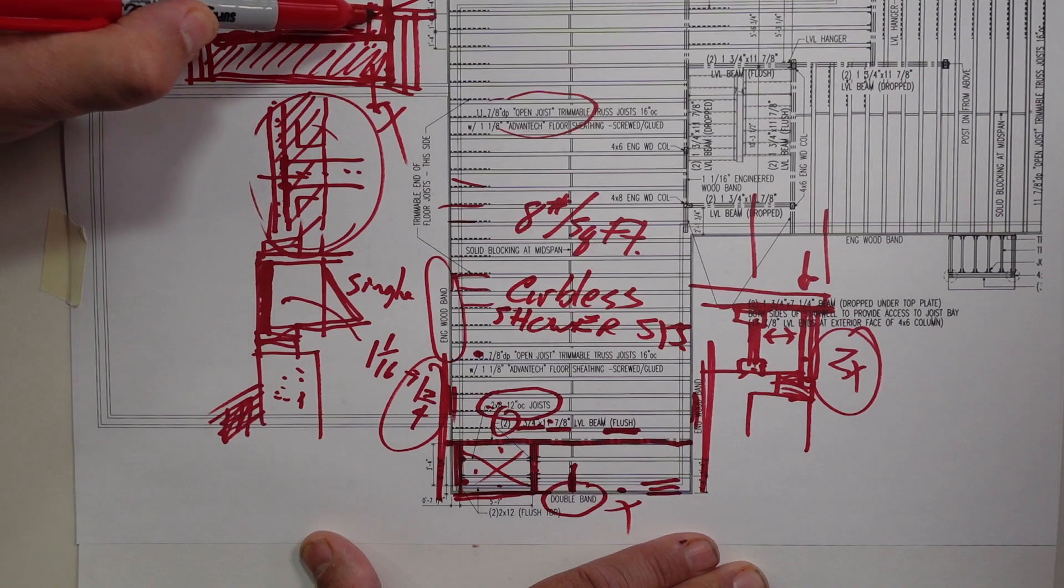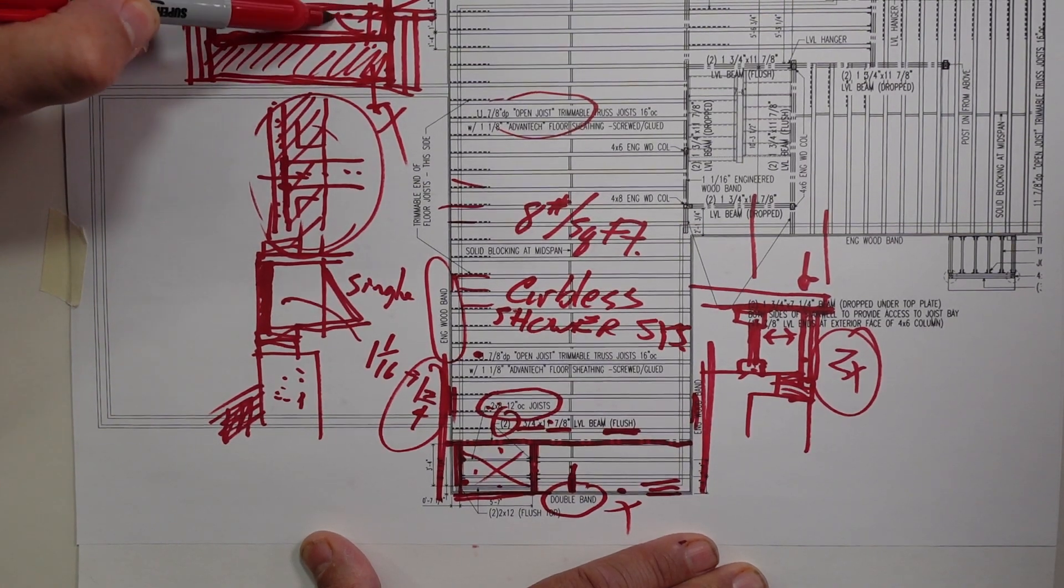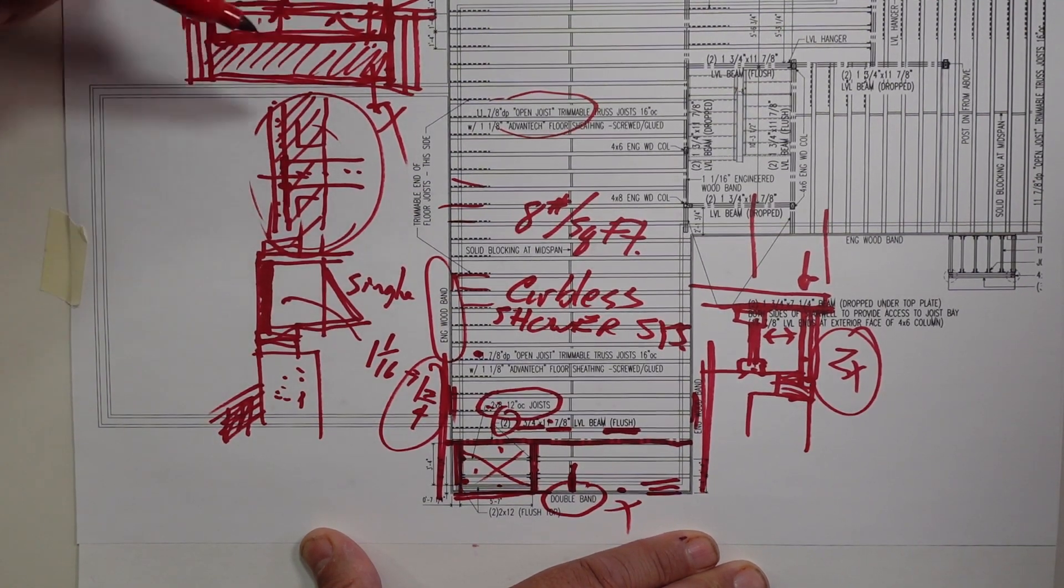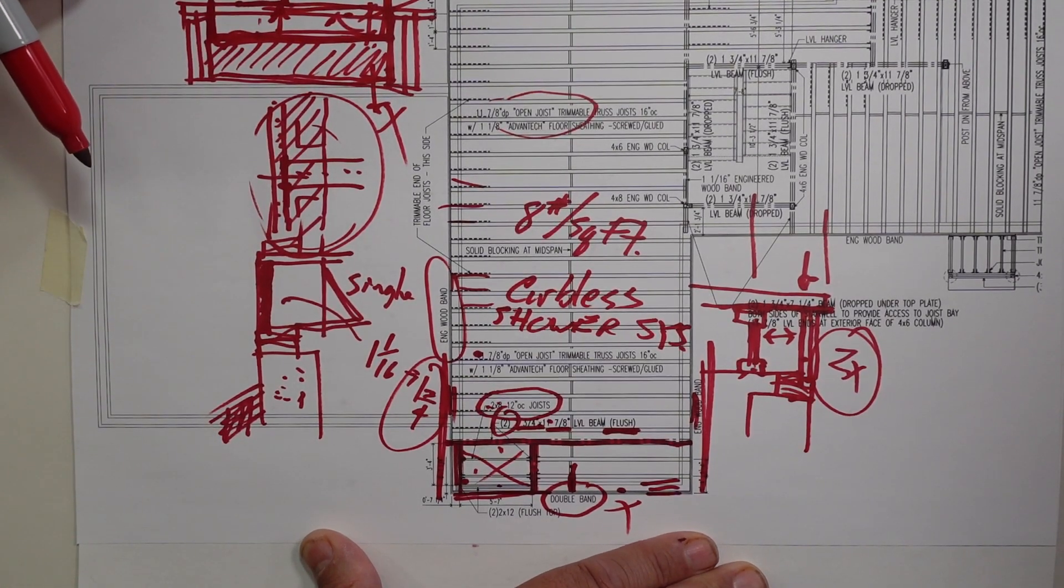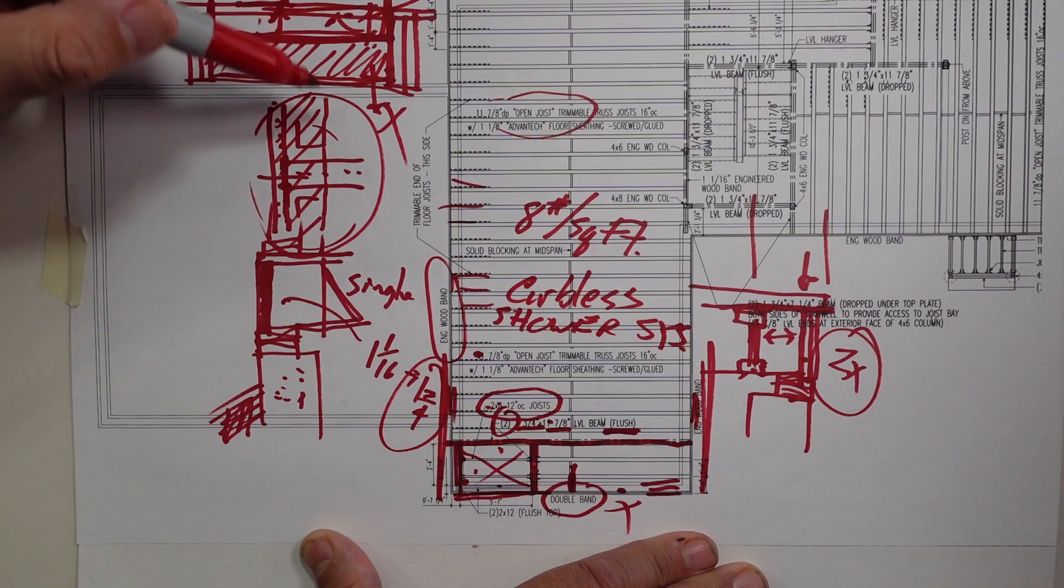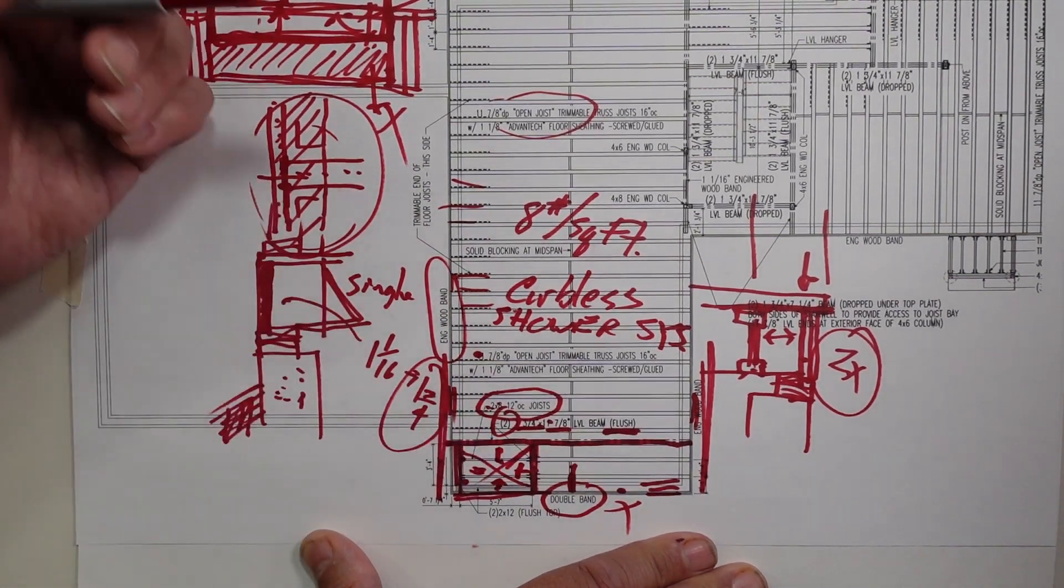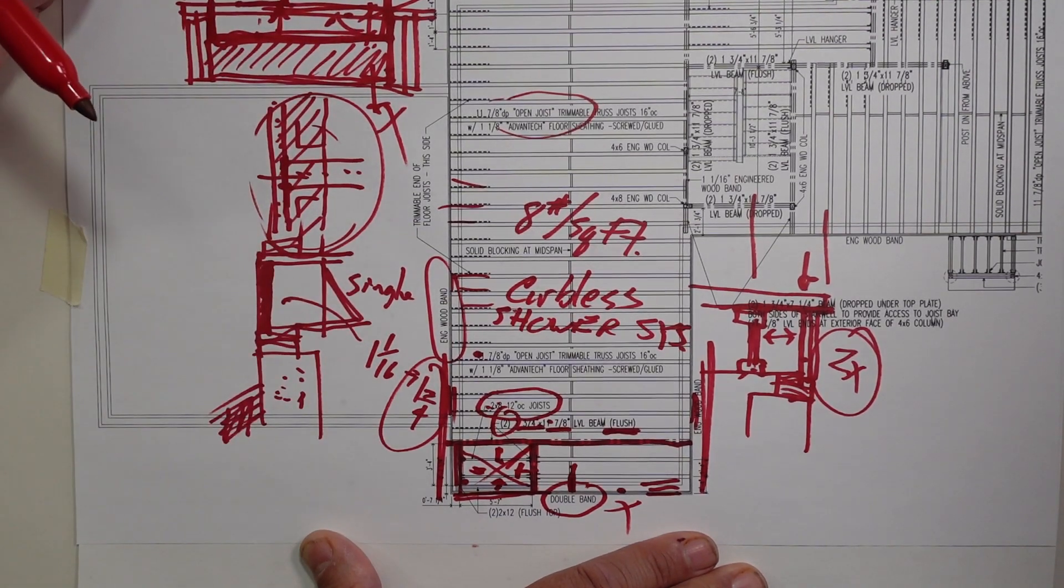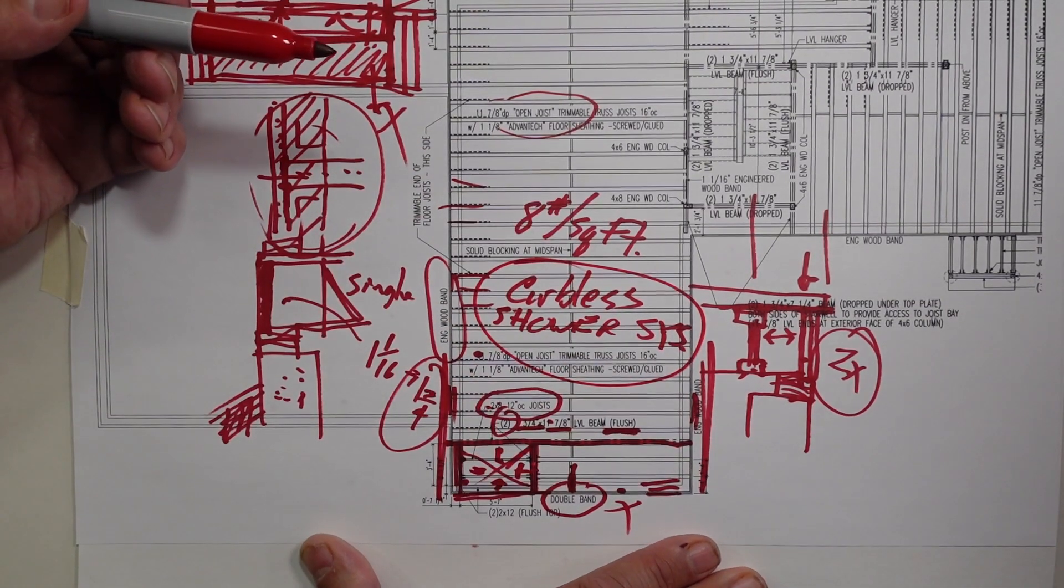By building that up, then we end up with a condition where our shower is now flush with our subfloor. Our shower floor is now flush with that condition. So the door sweeps literally on the tile floor. And of course, this is going to have some slope to it and minor slope where it takes the water to the drain there. But that's how you frame for a curbless shower system.